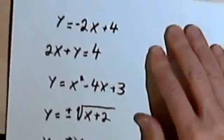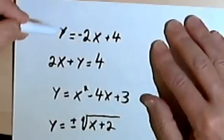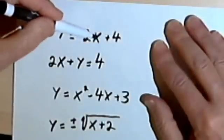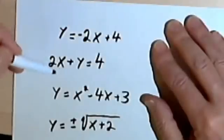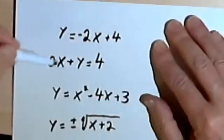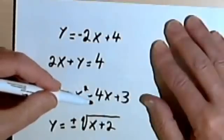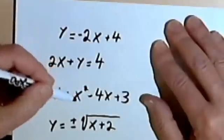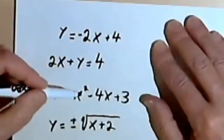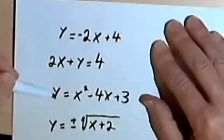Let's look at a few equations quickly and see if they are functions or not. Here I've got y equals negative 2x plus 4 — that's a function because whatever I put in as x, I'm going to get a specific answer out as y. Here I've got 2x plus y equals 4 — if x is the independent variable and y is the dependent variable, this is a function because this equation is essentially the same as the first one, just rearranged. And y equals x squared minus 4x plus 3 is also a function: if you tell me x is 3, I can calculate x squared, subtract 4x, add 3, and that always gives me the same y.